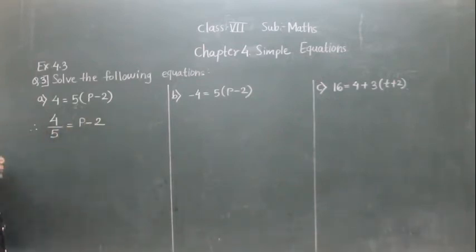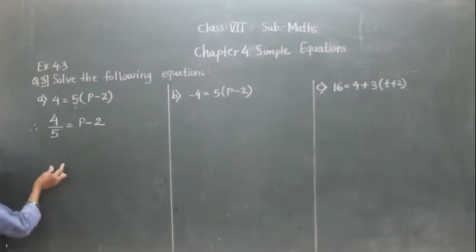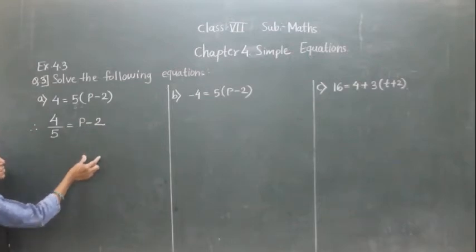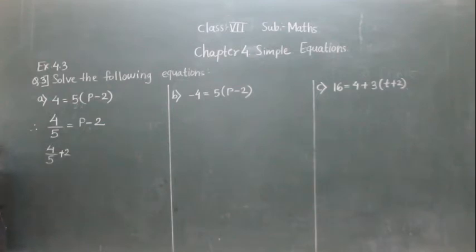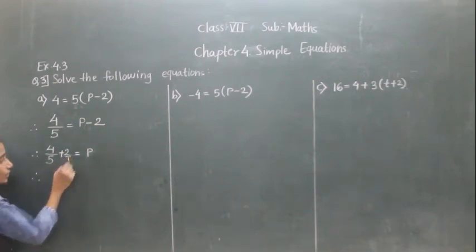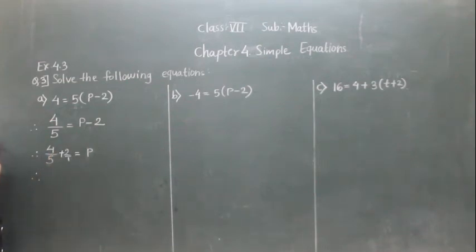After that, we transfer minus 2 to the left hand side. So we have 4 upon 5 plus 2 equals P. Now there is no denominator for 2, meaning its denominator is 1. This is not a like fraction, so we need to make the denominators the same.